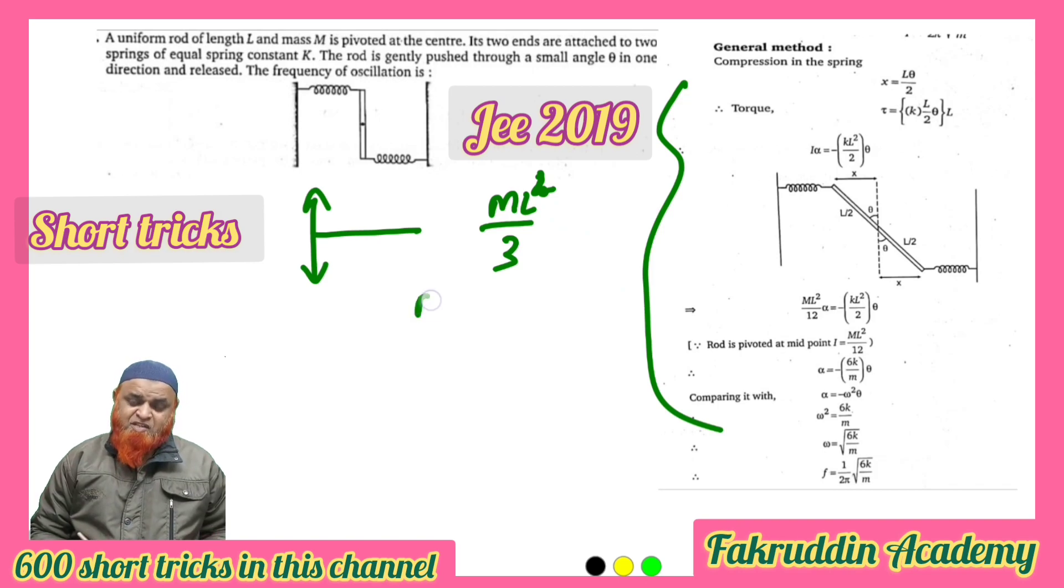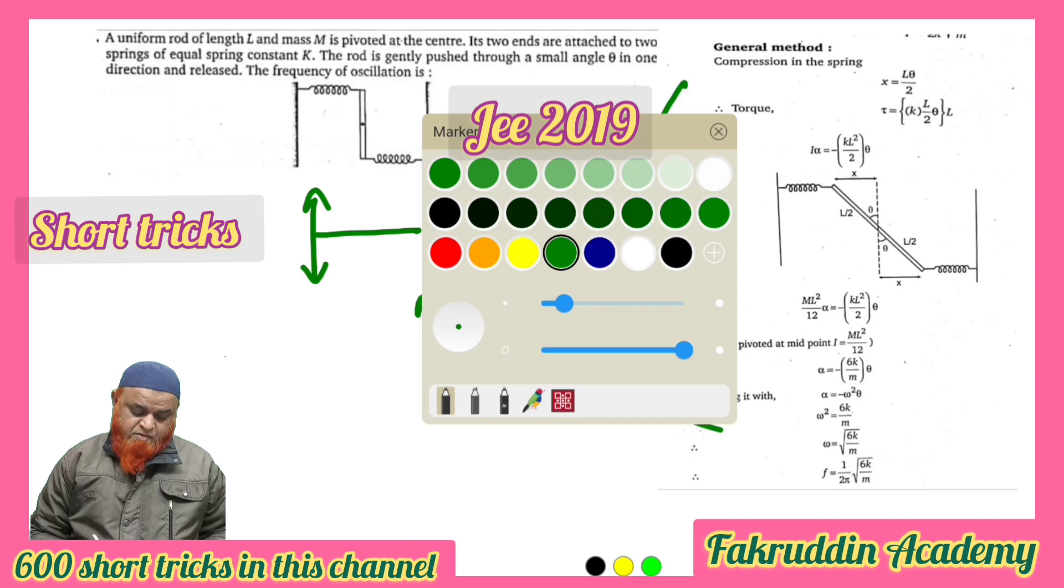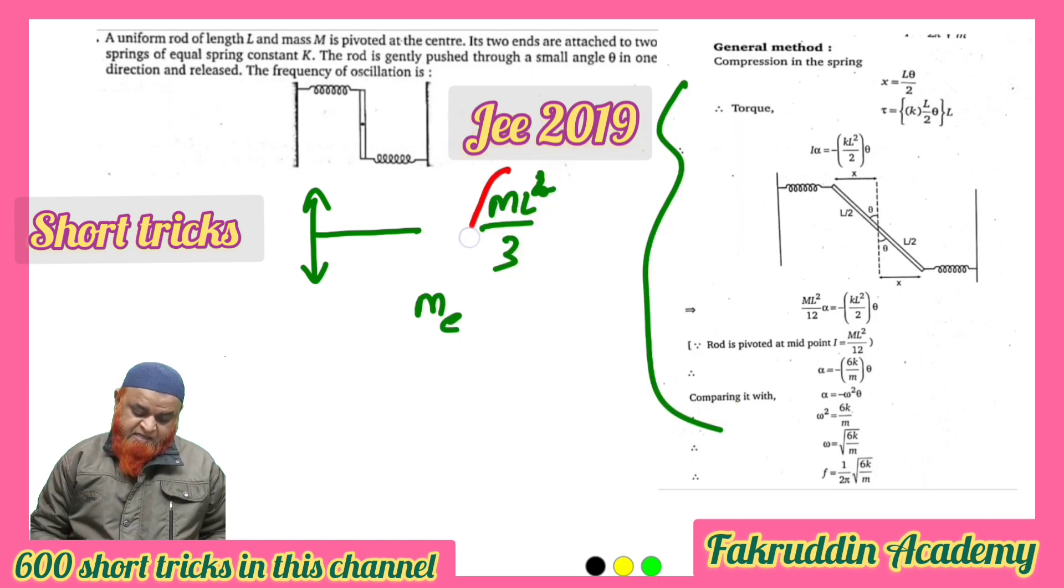So it is going to be ml² by 3. Then what is the effective mass here? You can consider the effective mass as m by 3. So I have taken the effective mass as m by 3.